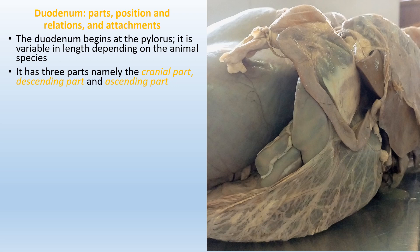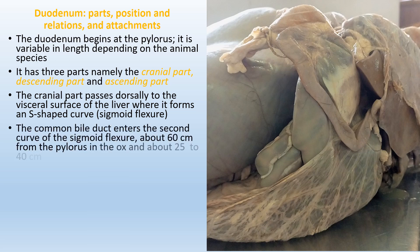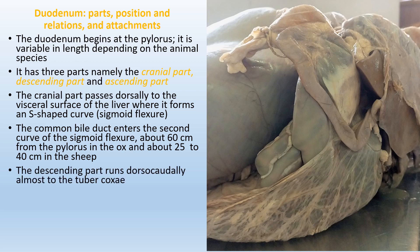The duodenum has three parts: the cranial part, the descending part, and the ascending part. The cranial part passes dorsally to the visceral surface of the liver, where it forms an S-shaped curve also known as the sigmoid flexure. The common bile duct enters the second curve of this sigmoid flexure at about 60 cm from the pylorus in the ox, and about 25–40 cm in the sheep and goat.